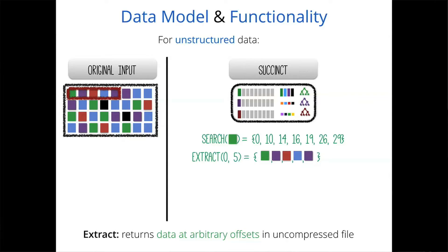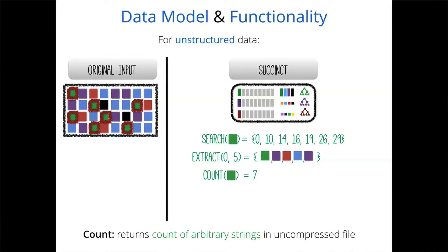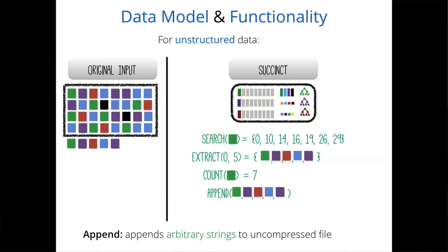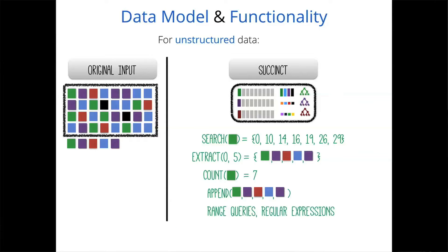You can also perform a count operation, which counts the number of occurrences of a particular term. Interestingly, Succinct performs count at much lower latencies than search, enabling some neat applications. We also support appending new data to the compressed data store via an append interface. Range operations and regular expressions are also supported on the same compressed representation using an interface quite similar to search.